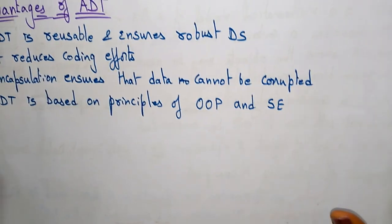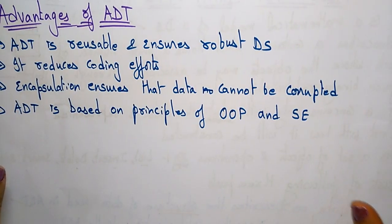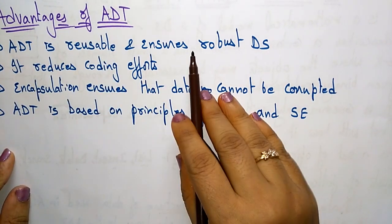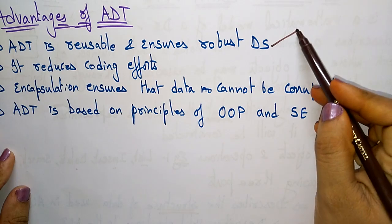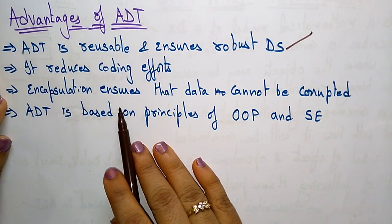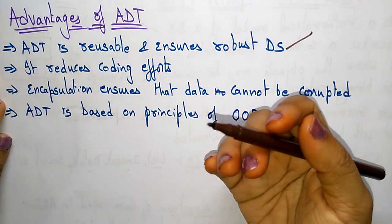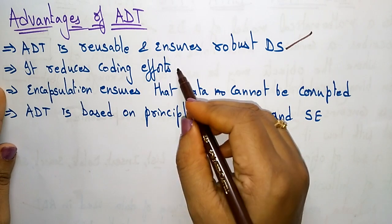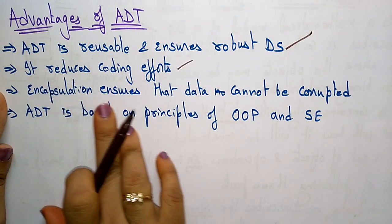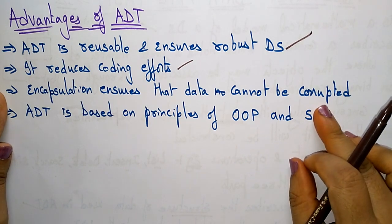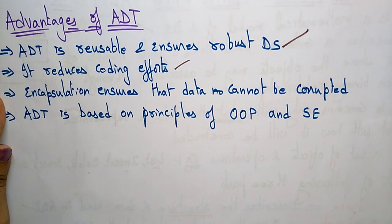Coming to the advantages of using abstract data type: first, abstract data type is reusable and ensures a robust data structure. Second, it reduces coding efforts. Third, encapsulation ensures that data cannot be corrupted.